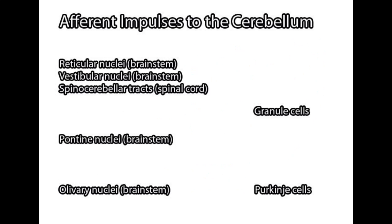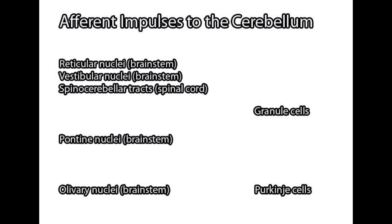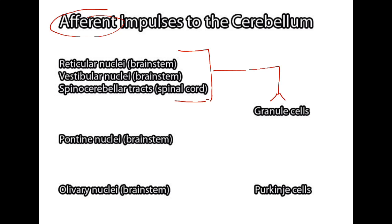Now that we understand the cellular anatomy of the cerebellum, the next step is to figure out how information is getting into the cerebellum and where it is coming from. Afferent impulses — meaning information going into or towards the cerebellum — come from several different places, many from areas in the brainstem: the reticular nuclei, the vestibular nuclei, the spinal cerebellar tracts from the spinal cord, the pontine nuclei, and the olivary nuclei. These structures send information to the granule cells via fibers known as mossy fibers.